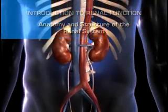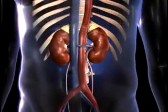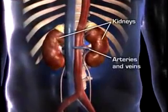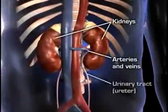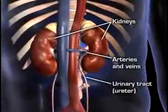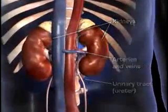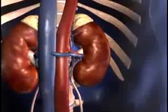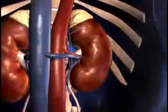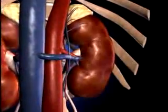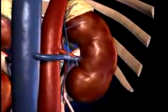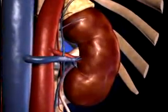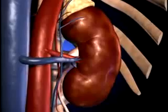The renal system consists of the kidneys, the connecting arteries and veins, and the urinary tract. The kidneys are paired, bean-shaped organs lying outside the peritoneal cavity in the back of the upper abdomen, one on each side of the vertebral column.